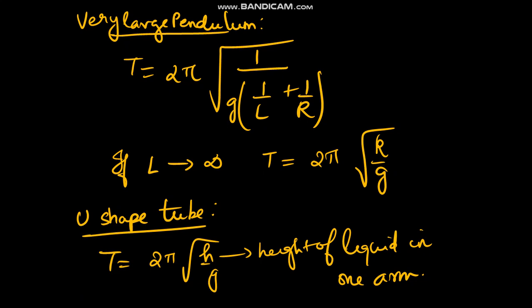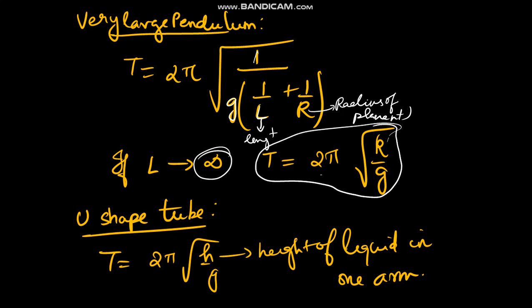For a very large pendulum — for example, one whose length is equal to or half the radius of the Earth — the time period is given by T = 2π√(1/g · 1/(1/L + 1/R)), where L is the length of the pendulum and R is the radius of the planet. If L is infinity, then T = 2π√(R/g). This is a common previous year question.